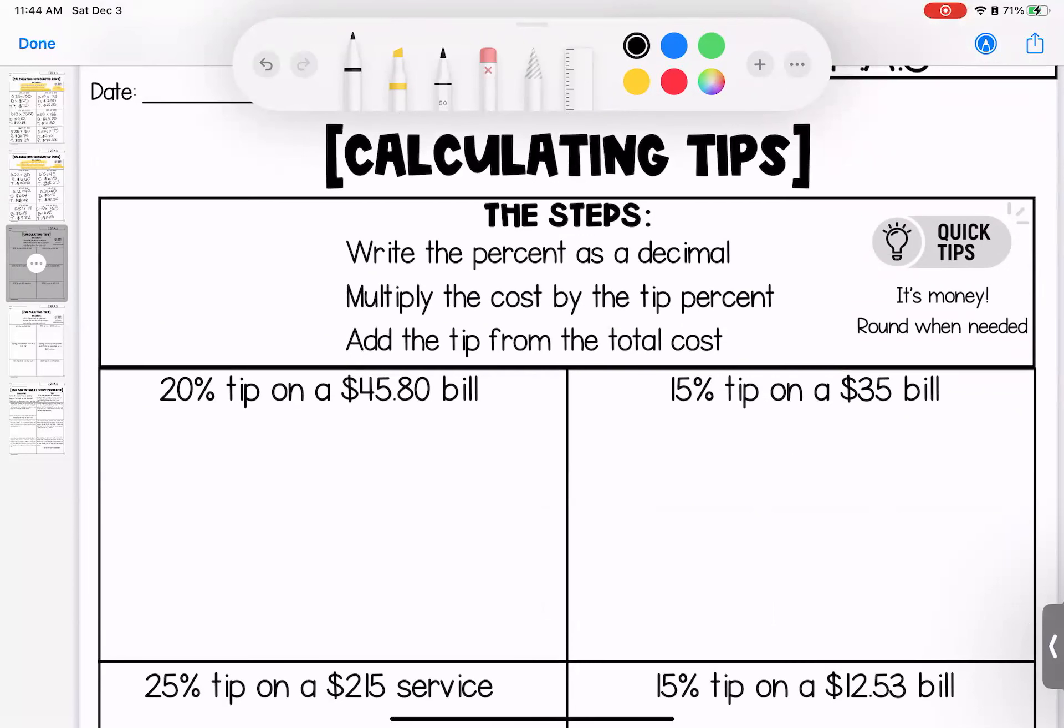All right, kiddos. We are now talking about calculating tips. Remember, a tip is an extra amount that you pay towards a service. We're going to use these in restaurants. You're going to do these for people in the service industry like hairdressers or house cleaners. Often tips are given around the holidays, so these are important things to be able to do. A lot of the steps are the same. Write the percent as a decimal. Multiply, but this time we're going to add the tip because when we're giving someone a tip, this is extra. Our amount should be increasing.